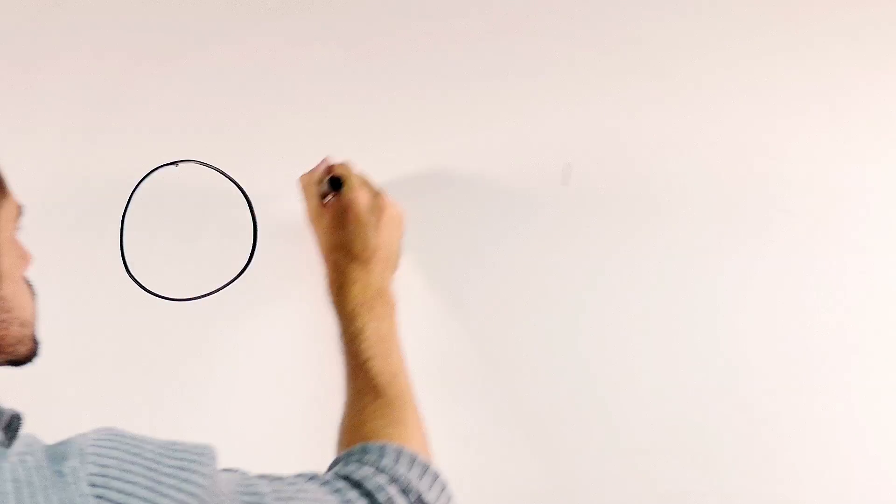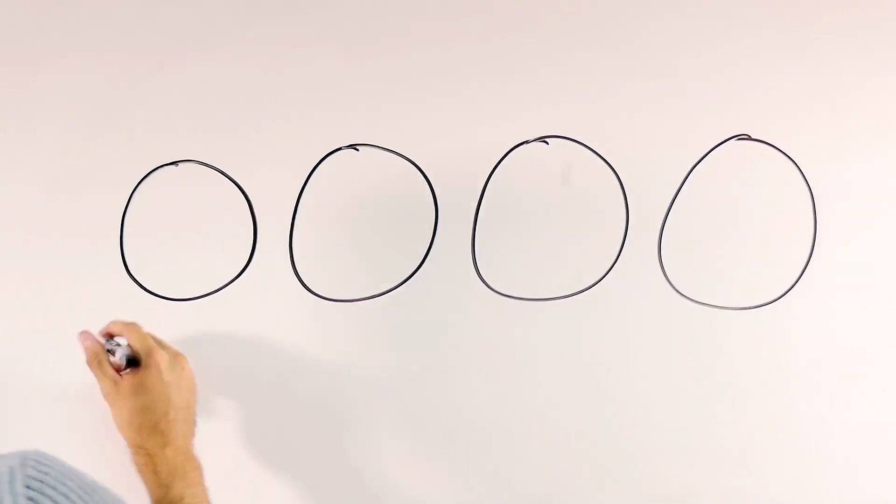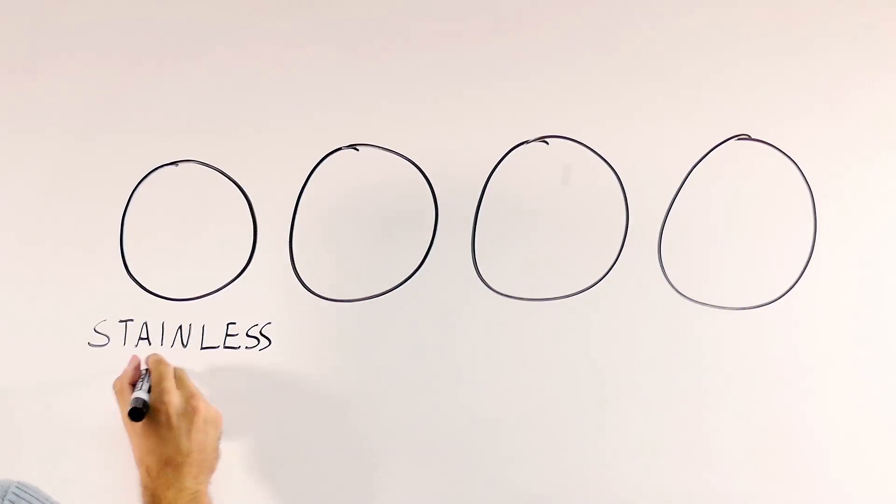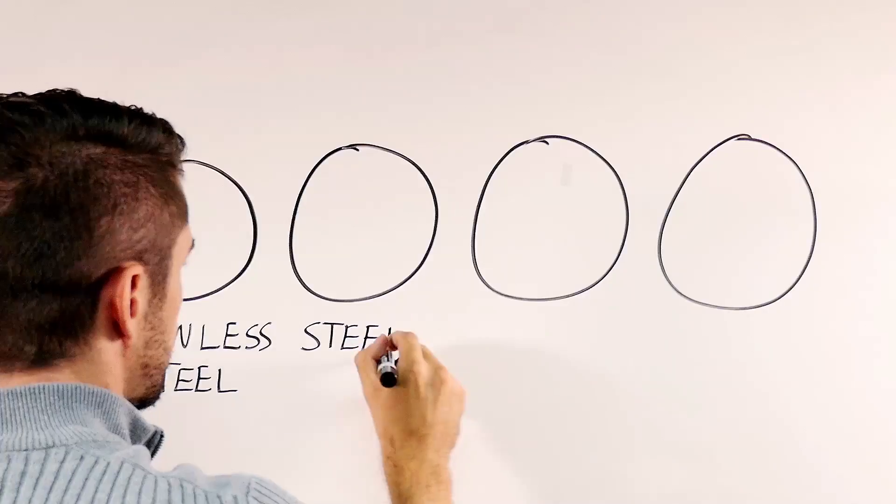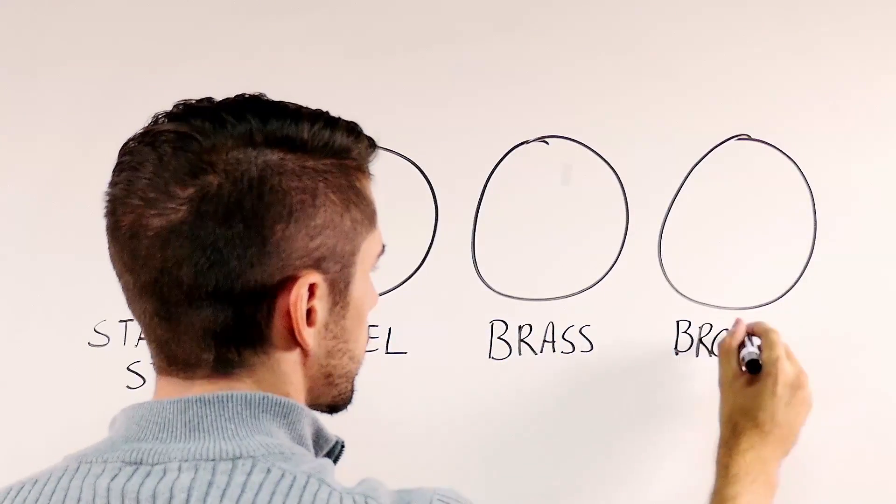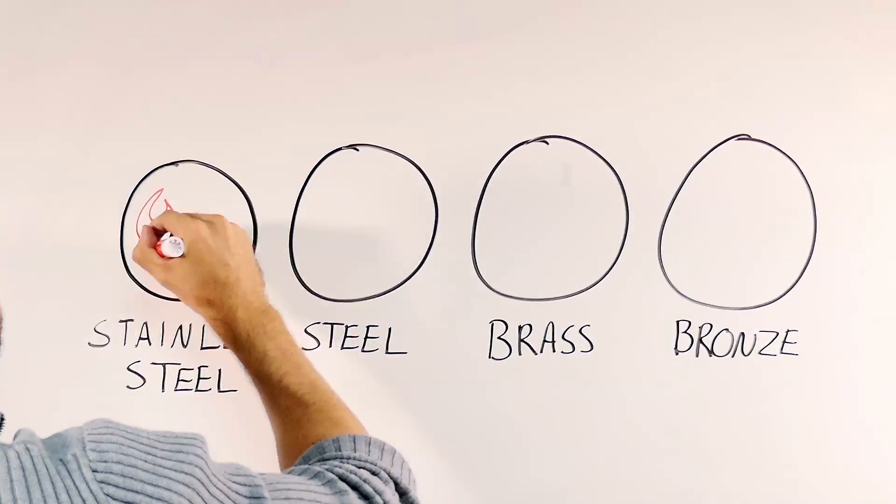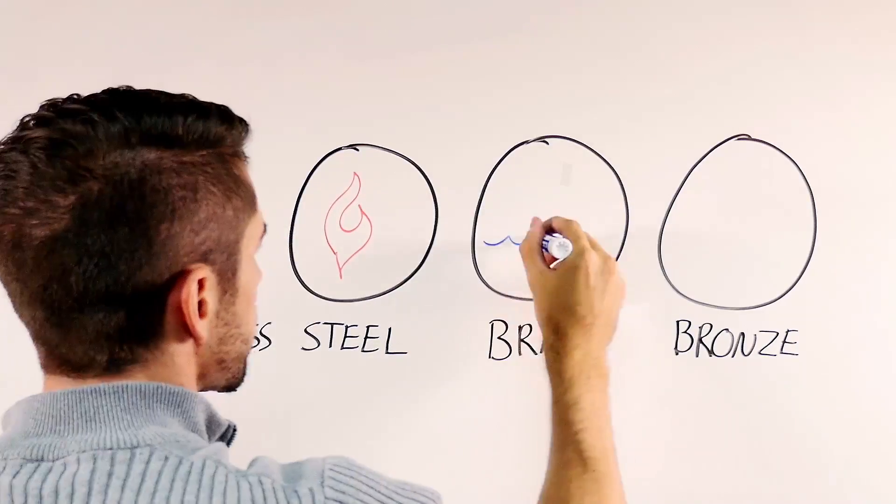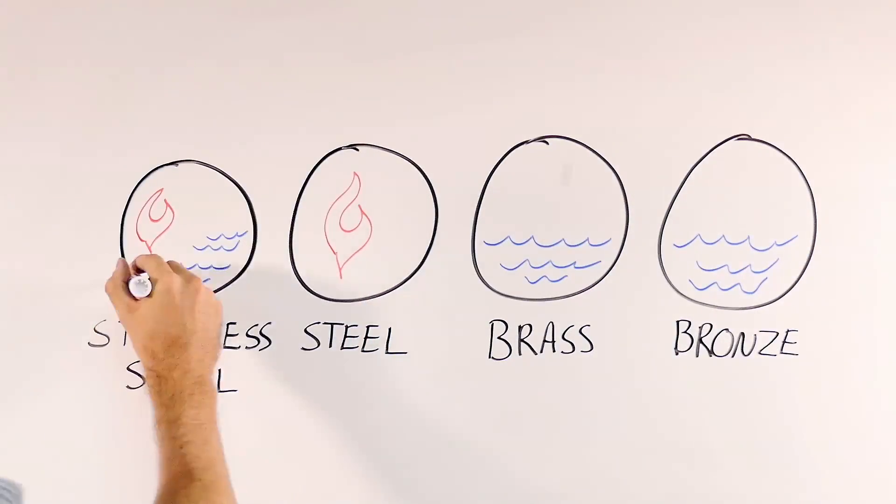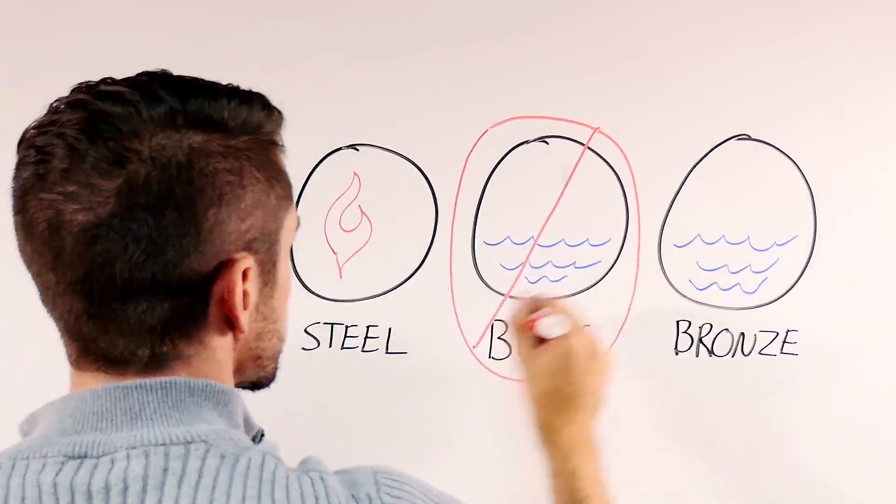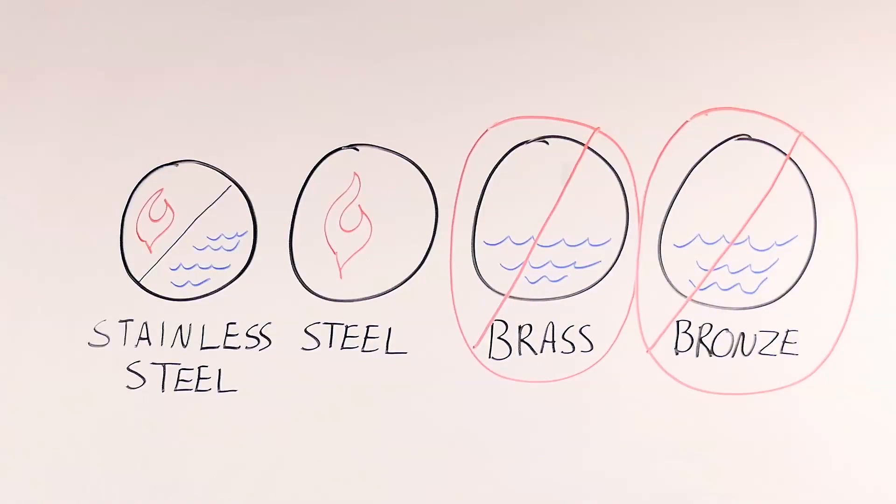Hinges for fire doors must be steel, ball bearing, and of a certain size and quantity. Other types of hinges and pivots are allowed if they are tested and listed for use on a fire door. Spring hinges are allowed for fire doors, but they do not control the door as well as a door closer, and improperly adjusted spring hinges have been a factor in numerous fires.